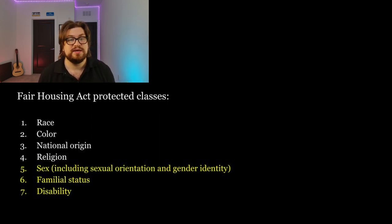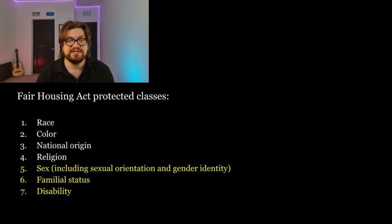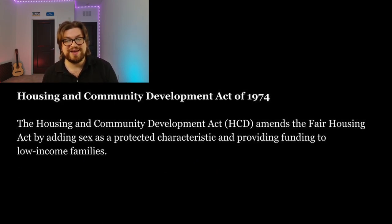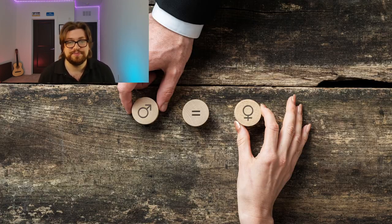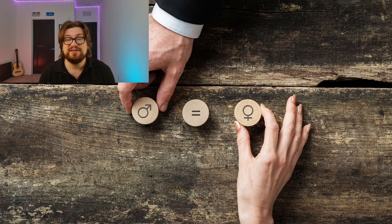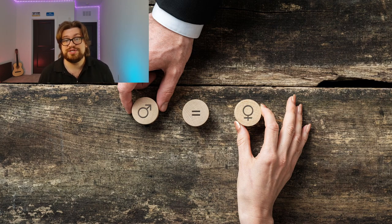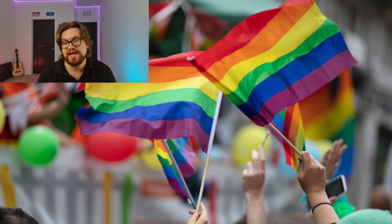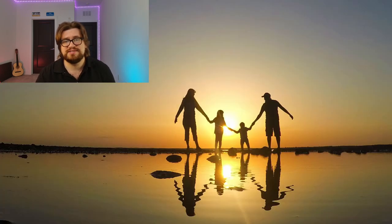It's essential to know when these highlighted classes were added and why. Sex was added by the Housing and Community Development Act of 1974. That act amended the Fair Housing Act by adding sex as a protected characteristic and provided funding to low-income families. Before 1974, housing providers could legally discriminate against and deny housing to women. Since 1974, the definition of sex has expanded to include sexual orientation and gender identity, meaning same-sex couples and transgender individuals are now protected under the Fair Housing Act.